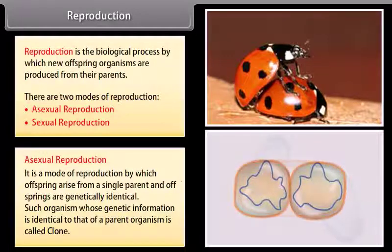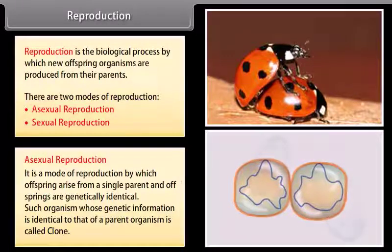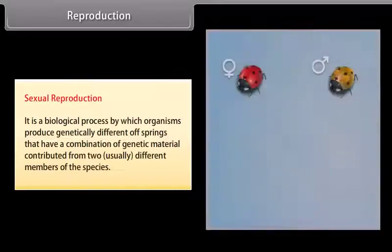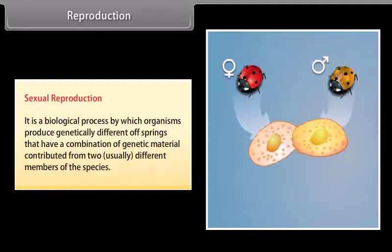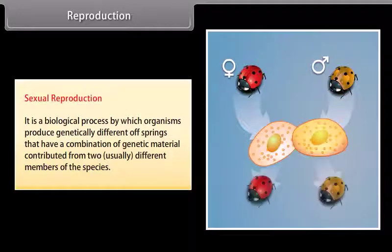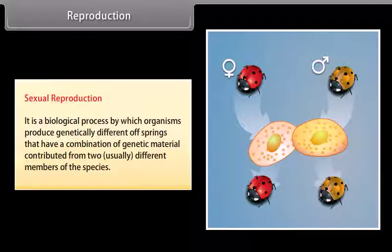Such organisms whose genetic information is identical to that of a parent organism are called clones. Sexual reproduction is the biological process by which organisms produce genetically different offspring that have a combination of genetic material contributed from two usually different members of the species.